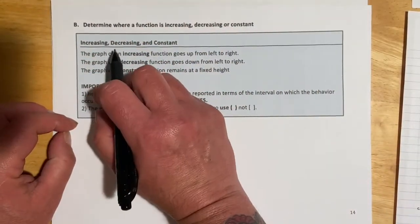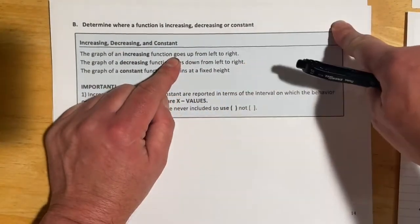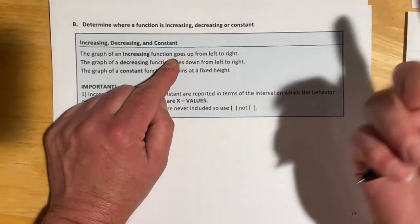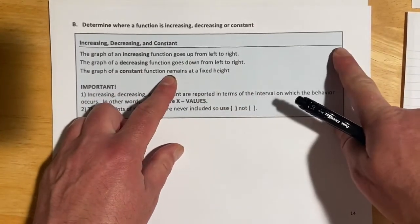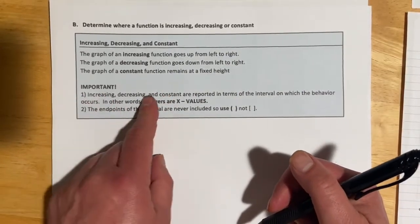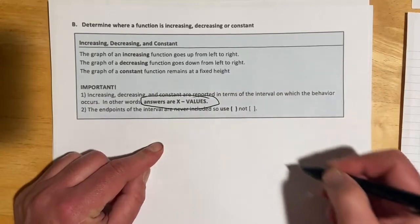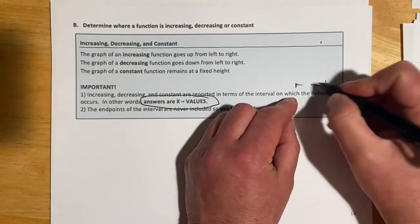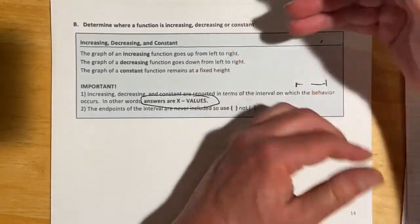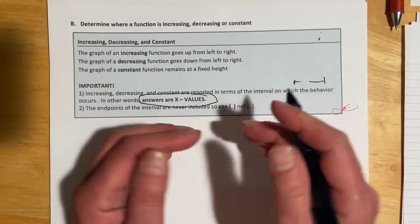Next up: determine where a function is increasing, decreasing, or constant. Increasing means the function is going up as we travel left to right; decreasing means going down; constant means it remains at a fixed height. Important: increasing, decreasing, and constant are all reported in terms of the X intervals where the behavior occurs — not Y values. And the endpoints of those intervals are never included, so we always use parentheses, never brackets.